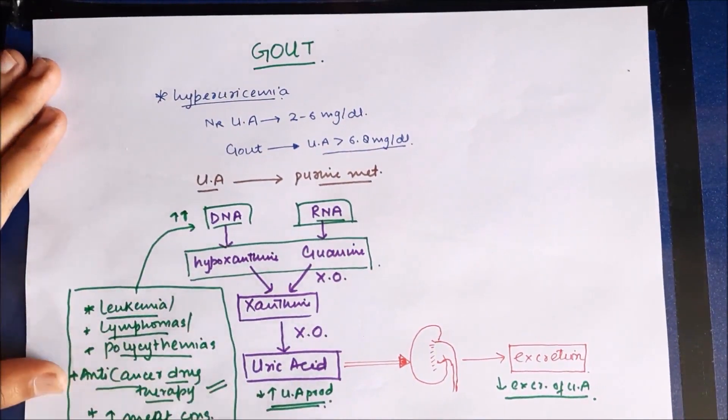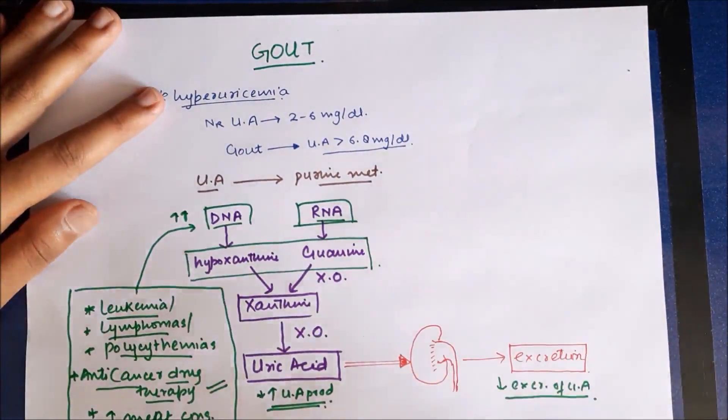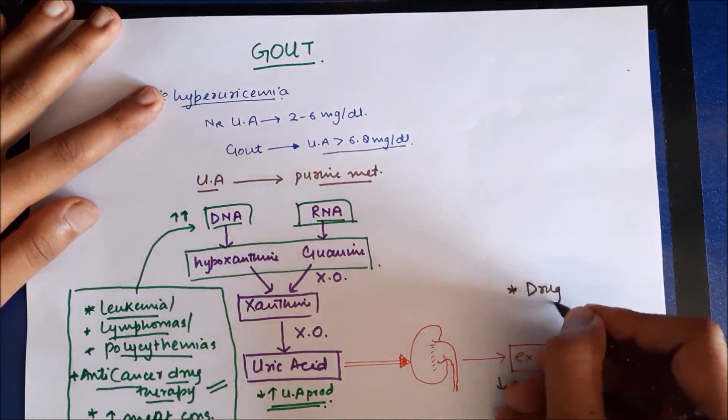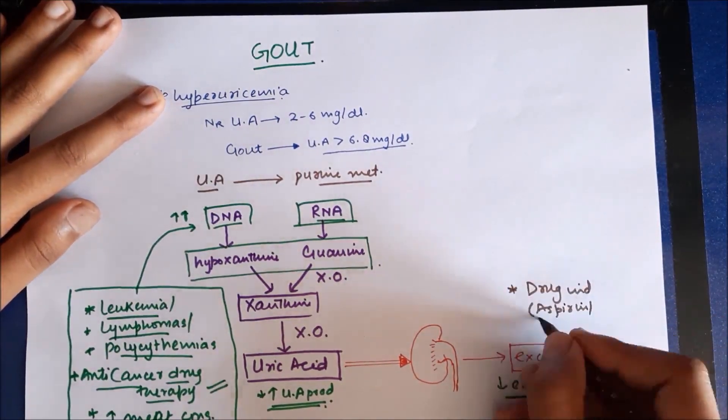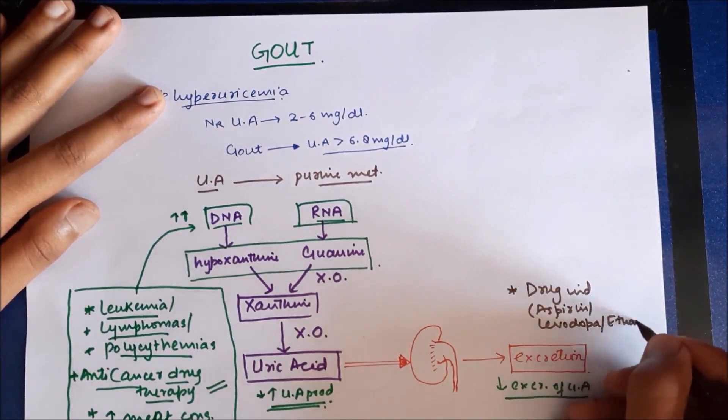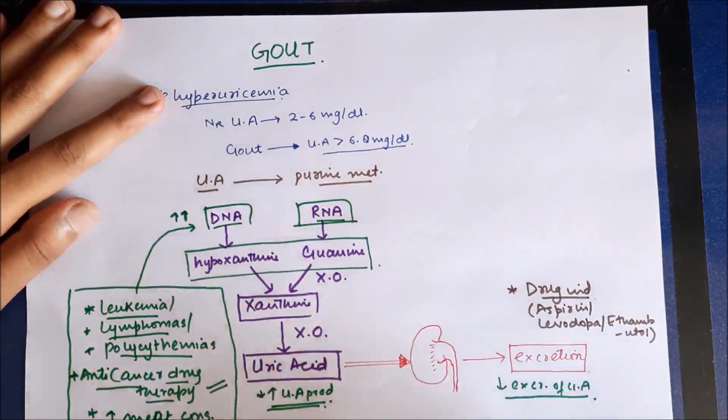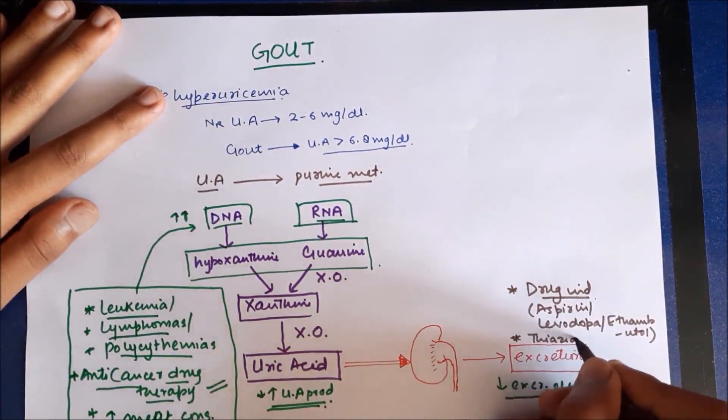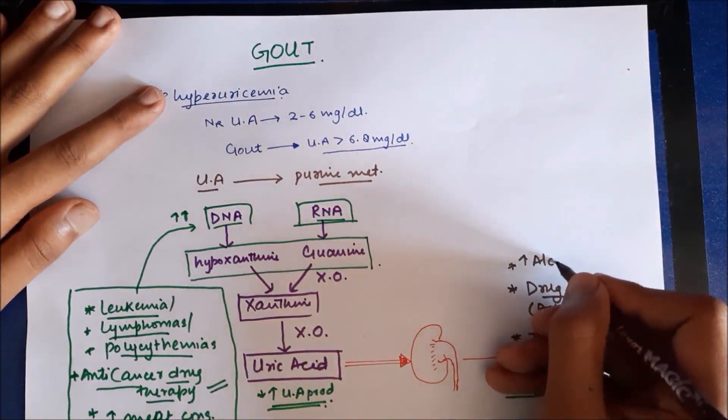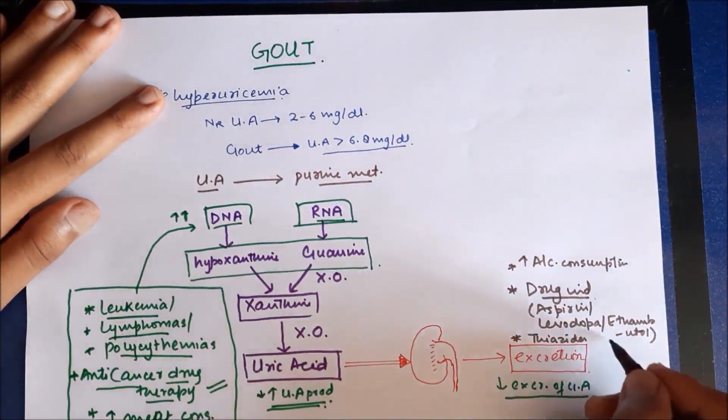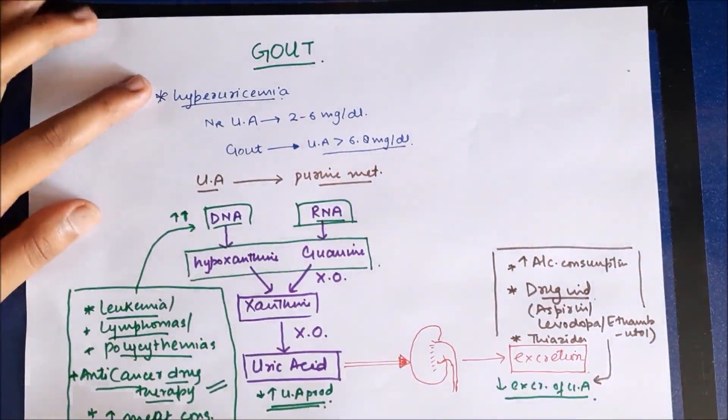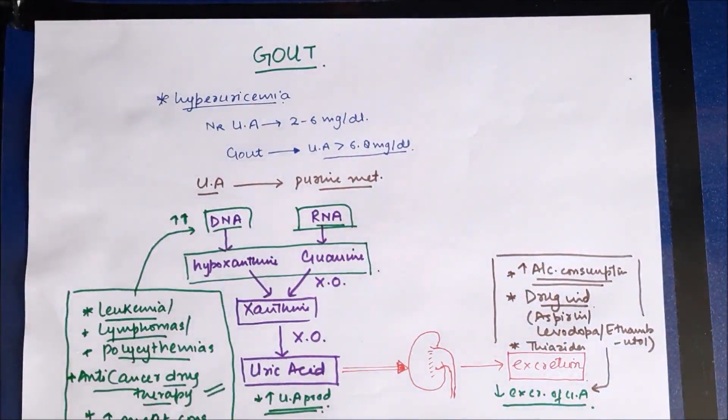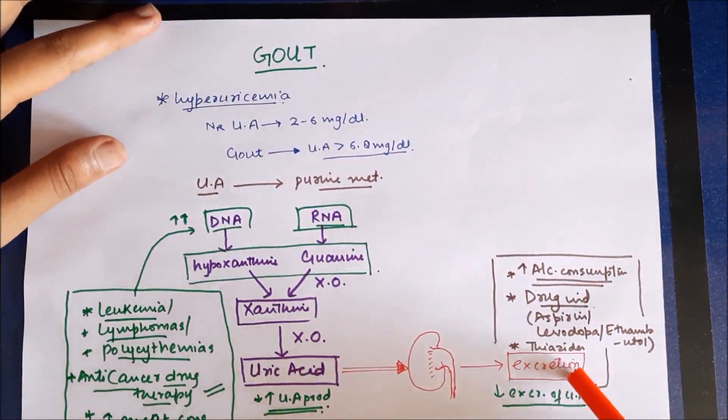Now use of certain drugs such as aspirin, levodopa, ethambutol, or even thiazides, and increased consumption of alcohol, there is decreased excretion of uric acid as they competitively inhibit the excretion of uric acid. These are secondary conditions which predispose to hyperuricemia.